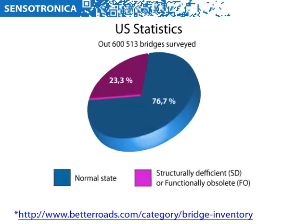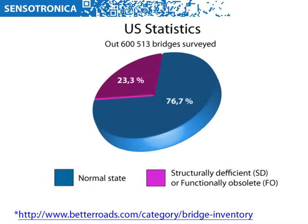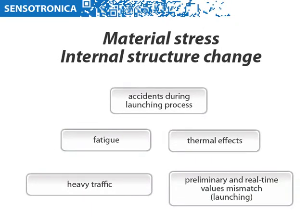Only in the United States, out of 6,513 bridges surveyed, 23% are considered to be structurally deficient or functionally obsolete. Unfortunately, there is a countless number of problems that can occur during bridge launching, maintenance and repair works. Material deformations and change of internal structure can be caused by accidents during the launching process, material fatigue, thermal effects, heavy traffic, and preliminary and real-time values mismatch.